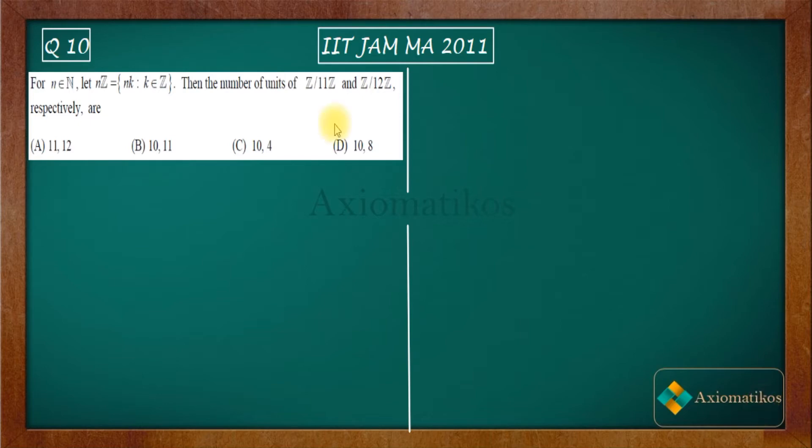For n belongs to natural numbers, let nZ be defined like this. Then the number of units of Z/11Z and Z/12Z—these are actually factor groups or quotient groups—you have to find out the number of units.